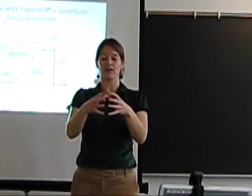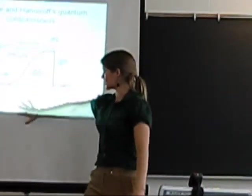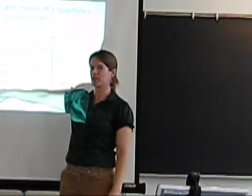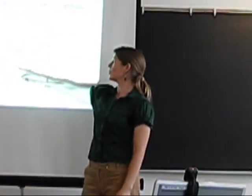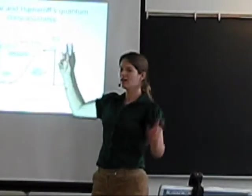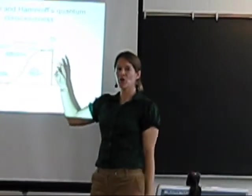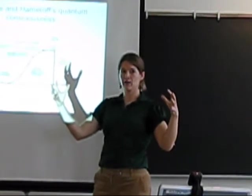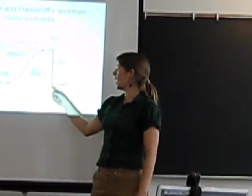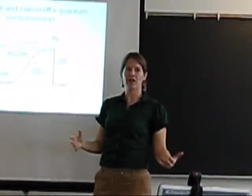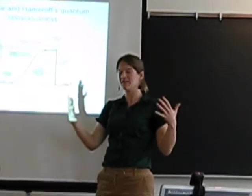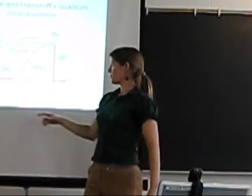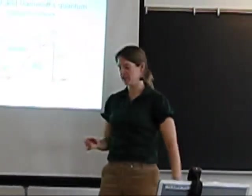And so he says that as we, whoops, so that brings me to this graph, which is the number of tubulins in superposition. So as you get more and more tubulin in superposition, you're going to reach a conscious threshold where self-collapse is going to occur for all of those correlated tubulin, and they'll all collapse into one state or another, which is not synonymous, analogous to a decision.